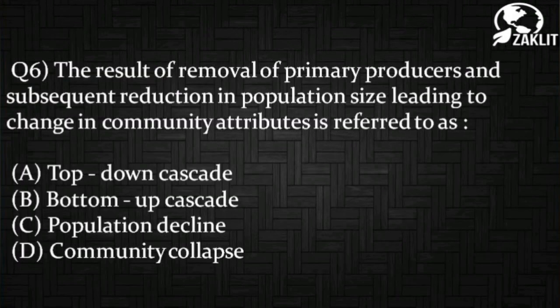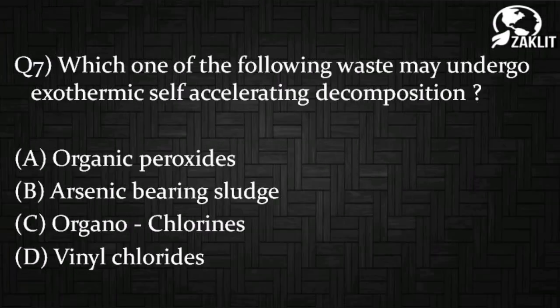Question number six: the result of removal of primary producers and subsequent reduction in population size leading to a change in community attributes is referred to as? Question number seven: which one of the following wastes may undergo exothermic self-accelerating decomposition?